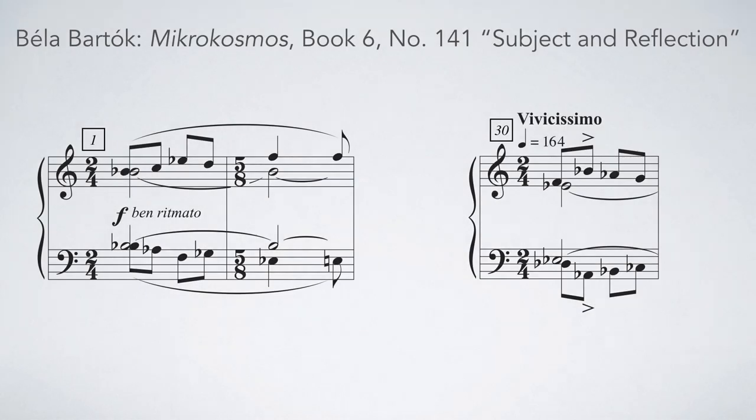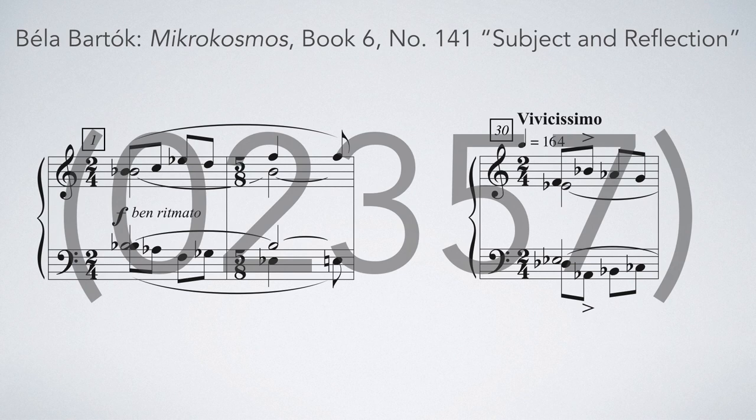Analytically, the concept of set class is useful because it can show coherence in a composition. Bartók's Subject and Reflection, for example, uses the 0, 2, 3, 5, 7 set class almost exclusively, although it appears in many transpositions and inversions.